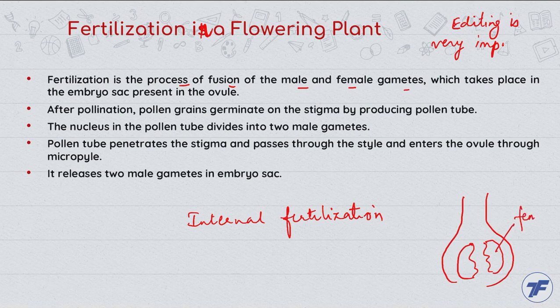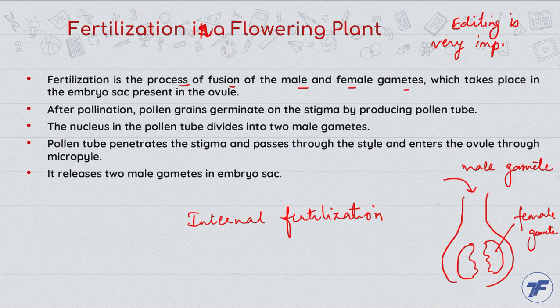This is the female gamete and the male gamete comes from here. So it takes place in the embryo sac, present in the ovule. After pollination, pollen grains germinate on the stigma.